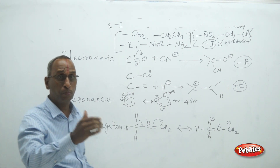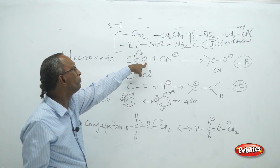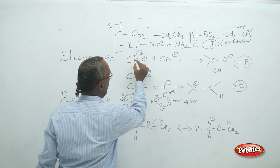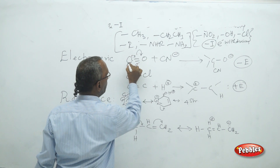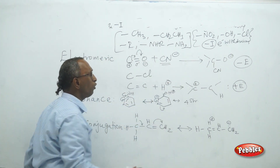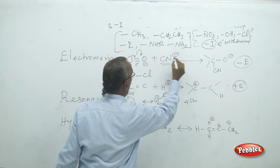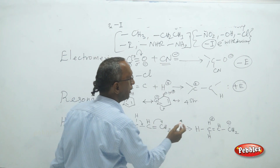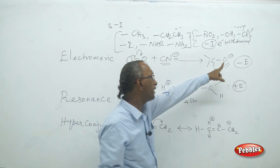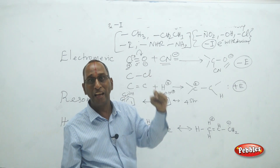Since the pi bond is weaker, its electrons shift towards the more electronegative atom. For example, in a carbon-oxygen double bond, oxygen is more electronegative, so the pi electrons shift towards oxygen. Carbon becomes positive and oxygen becomes negative. When a cyanide group (negatively charged) attacks the positively charged carbon, the result is a negatively charged species — this is called minus-E effect or minus electromeric effect.